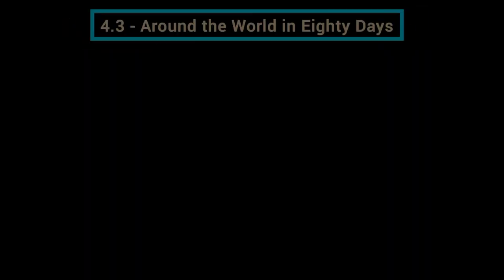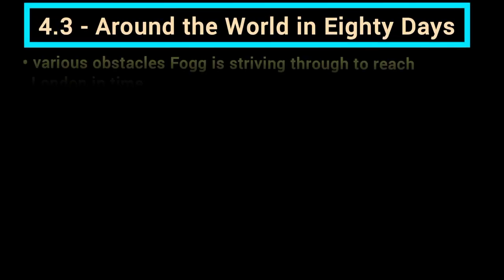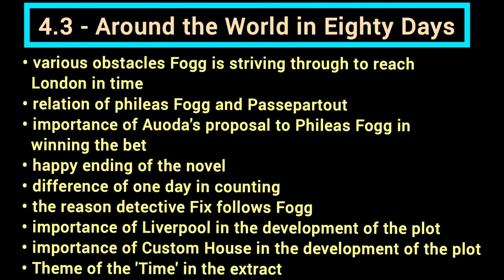See the questions on 'Around the World in 80 Days': various obstacles Fogg is driving through to reach London in time; relation of Phileas Fogg and Passepartout; importance of Aouda's proposal to Phileas Fogg in winning the bet; happy ending of the novel; difference of one day in counting; the detective Fix who follows Phileas Fogg; importance of Liverpool in the development of the plot; importance of Custom House in the development of the plot.